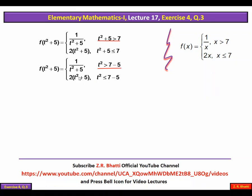Now we simplify the conditions. For t² + 5 > 7: subtract 5 from both sides to get t² > 2, which gives t > √2. For t² + 5 ≤ 7: subtract 5 to get t² ≤ 2, which gives t ≤ √2.